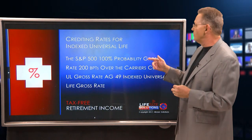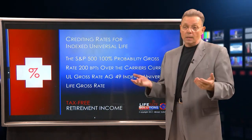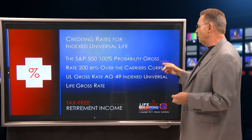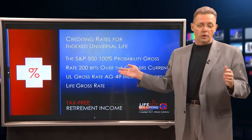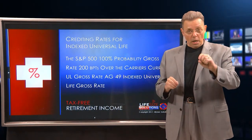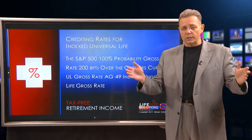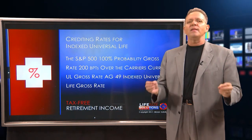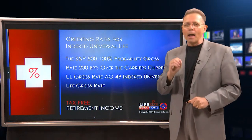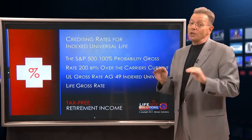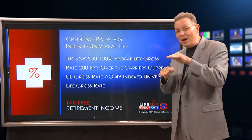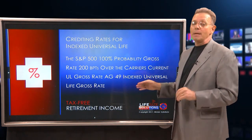Now, crediting rates for indexed universal life — the reason I'm going to harp on this is because this is the main product line on the street getting so much attention. The S&P 500 is 100% probability gross. A carrier came out with rates using two 20-year tranches month to month — about 400-plus segments — on an annual point-to-point basis. The probability rate for the S&P 500 under those two 20-year tranches averaged right around 5.5%. Oddly enough, if you were looking at the probability rate of the S&P for par whole life, that was pretty close — participating whole life and the S&P at 5.5%.